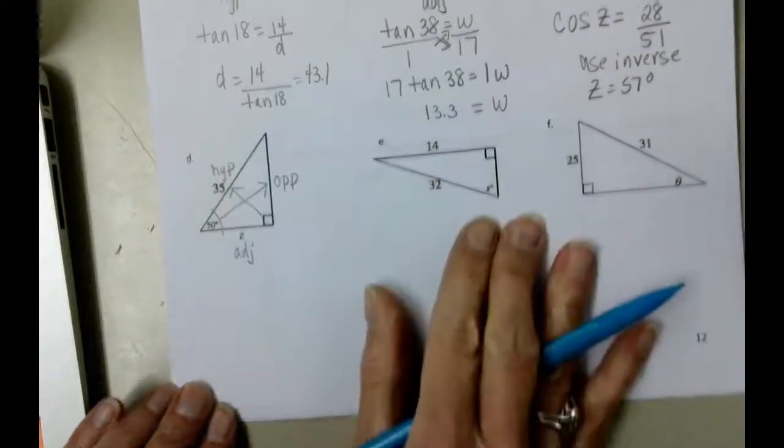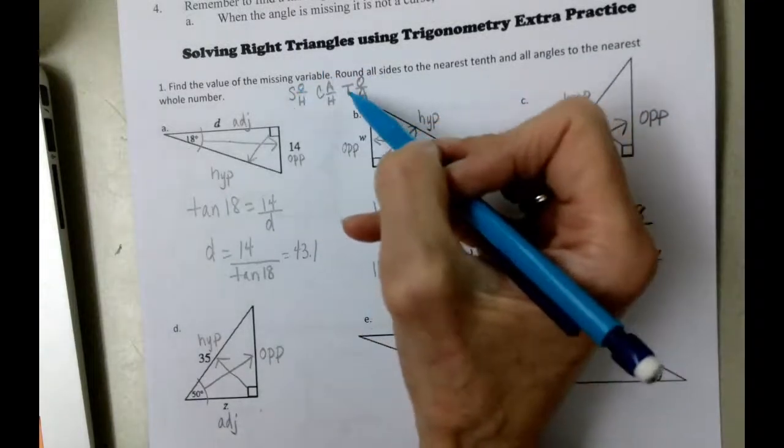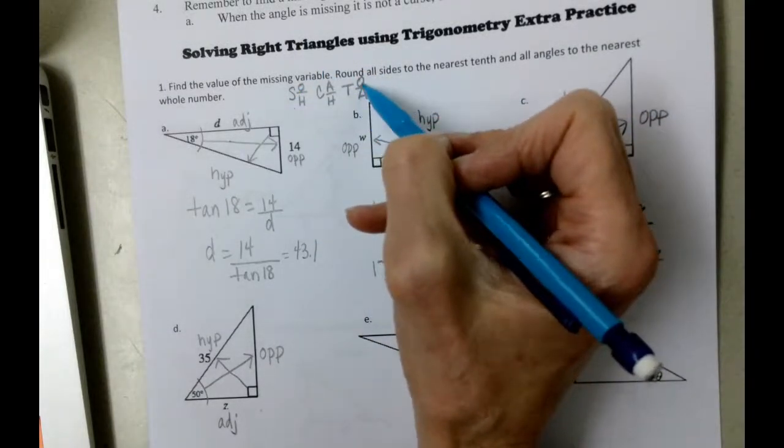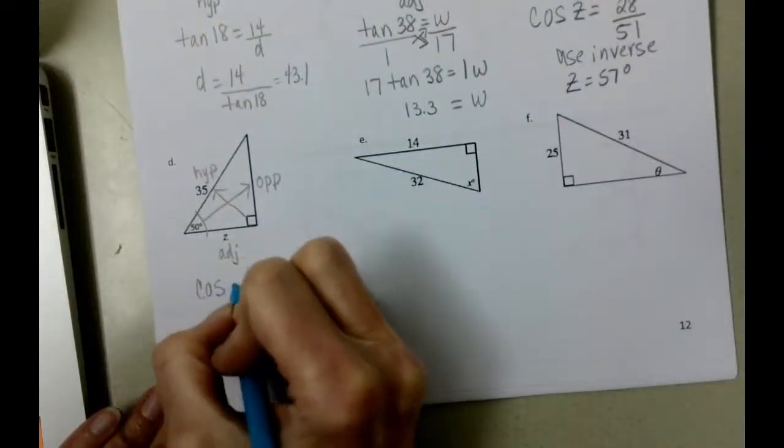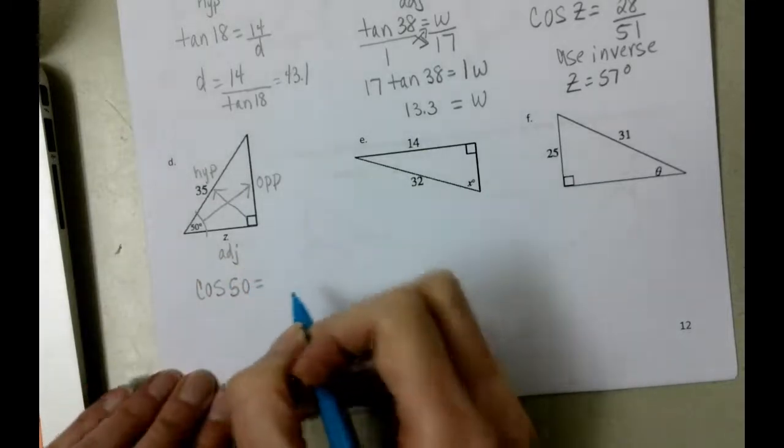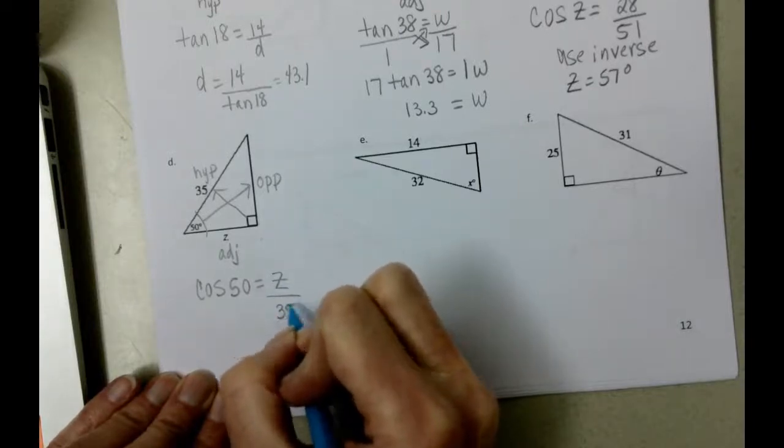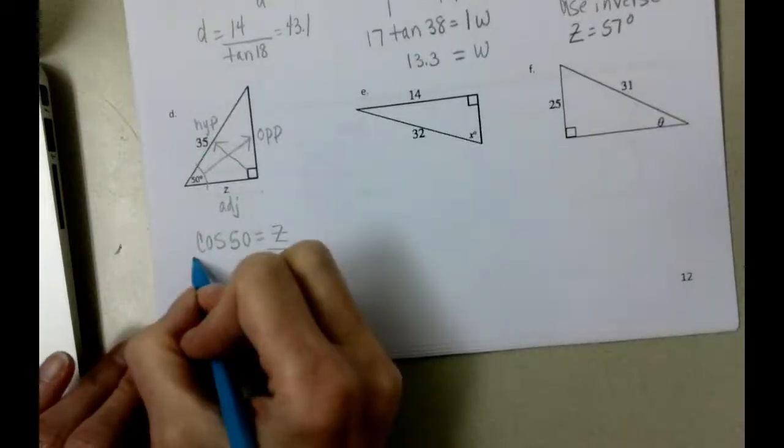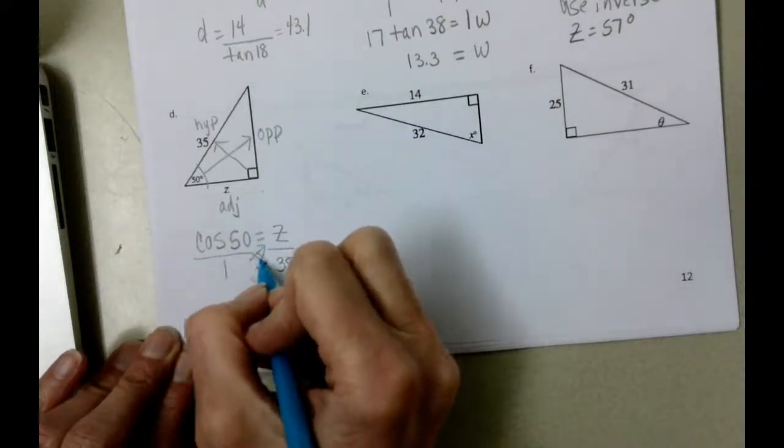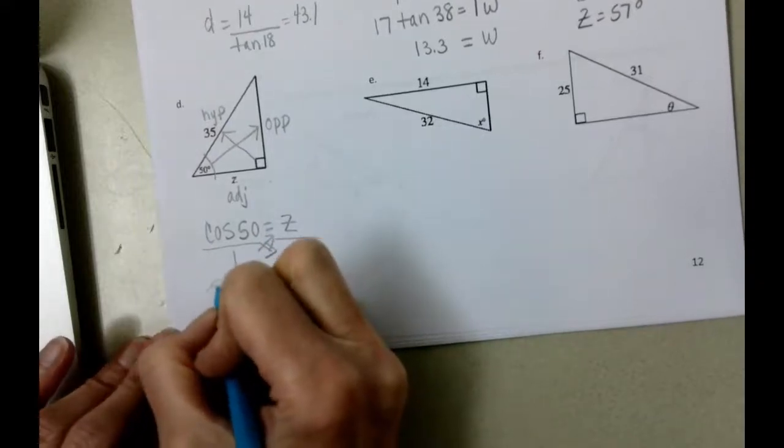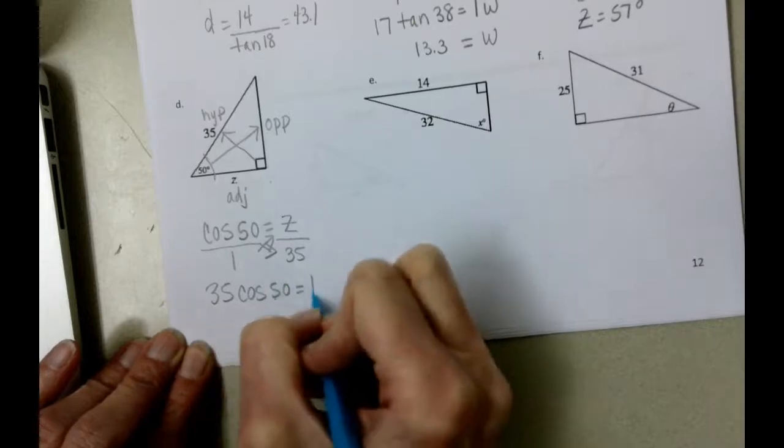And we know again nothing about the opposite. So as we go back here and we look, sine has opposite in it, we're not going to use it. Tangent has opposite in it, we're not going to use it. We're going to be using cosine. So this is going to be the cosine of 50 equals the adjacent divided by the hypotenuse. And when the variable is up high, we're going to multiply. So we're going to cross multiply. So we get 35 times cosine of 50 equals 1 times Z.